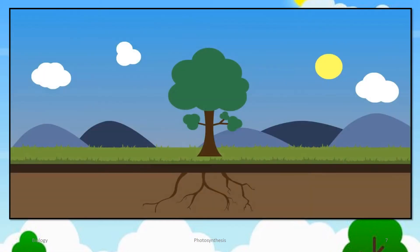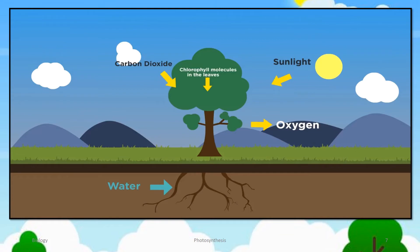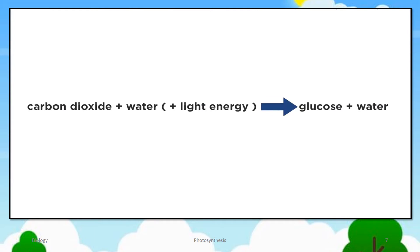Photosynthesis is a chemical reaction in which carbon dioxide and water are converted to glucose and oxygen by the energy provided from the light energy absorbed by chlorophyll. It is an endothermic reaction because it takes in energy from its surroundings. We show the light energy in brackets because whilst it is not a substance, it is an essential requirement for photosynthesis to happen.